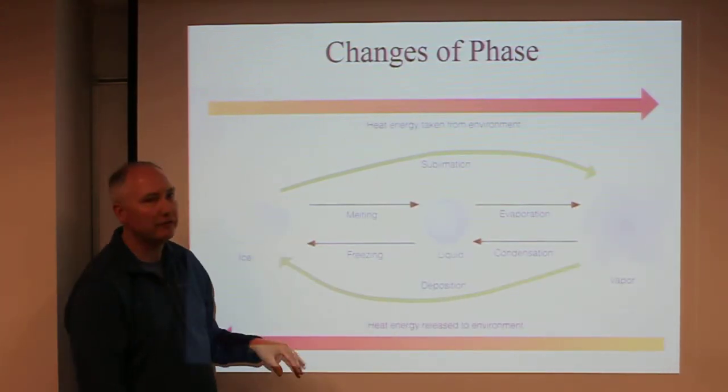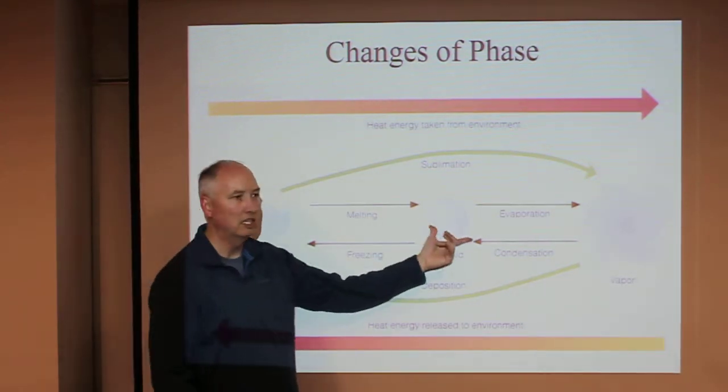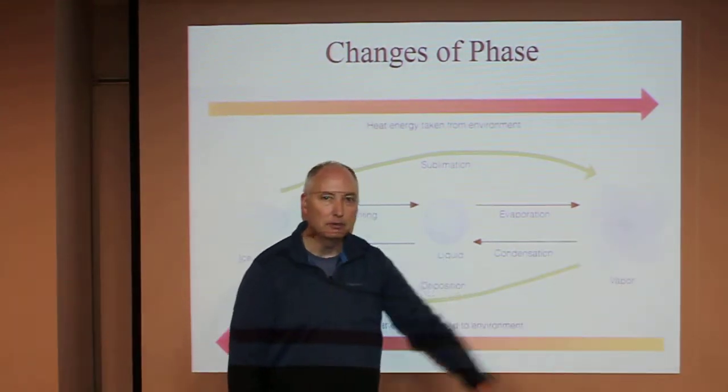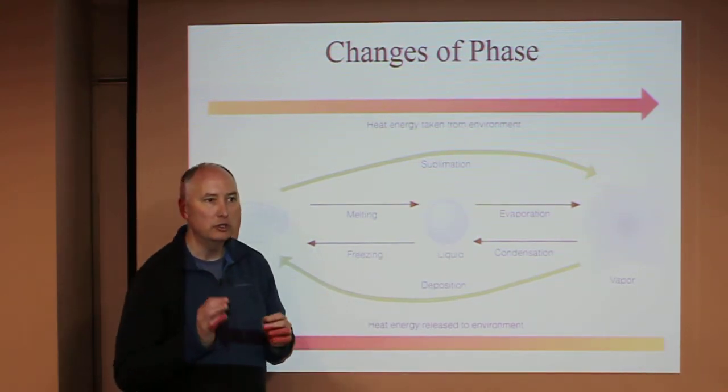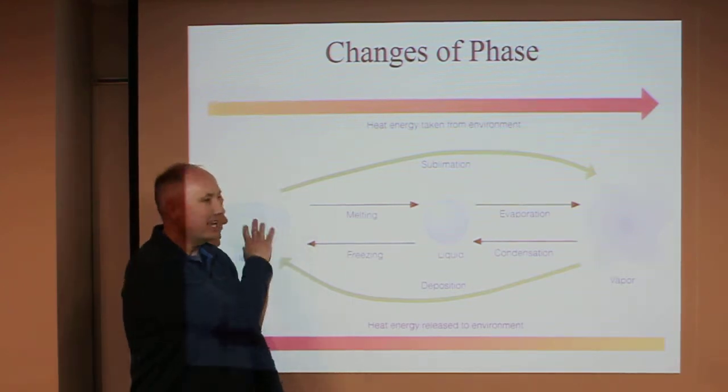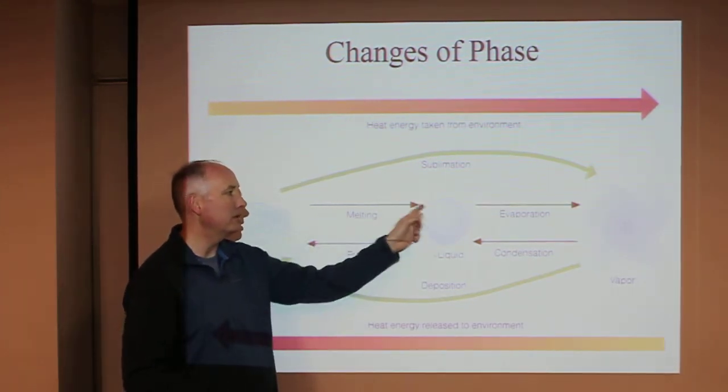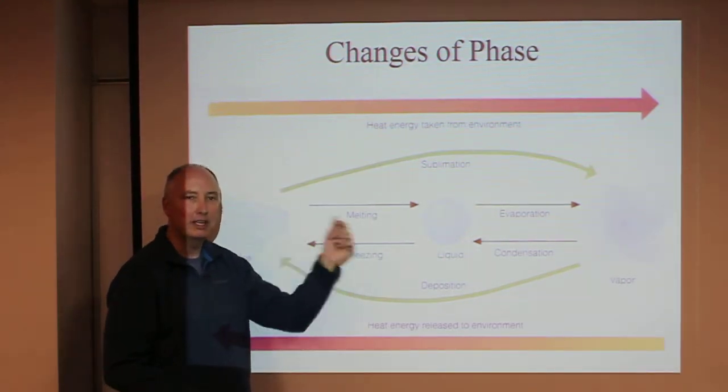Here we have the changes of phase. We have ice, which is a solid, liquid, and water vapor. We want to use our terminology to describe the transformations that occur. When you take ice and put it in your hand, it melts. This is the phase change from ice to liquid. If you put liquid water in the freezer, it freezes and goes back to ice.